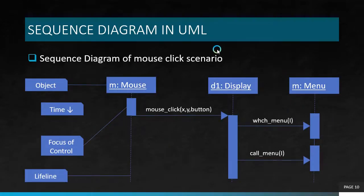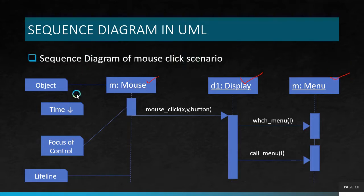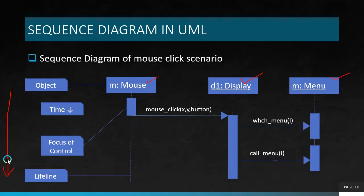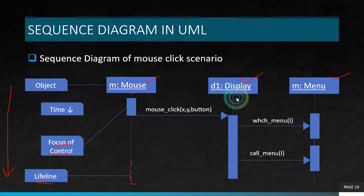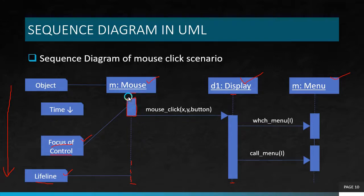Next, let's consider the sequence diagram. In a sequence diagram, there are three important things to consider. First are the objects — here we have a mouse object, a display object, and a menu object. Also, note that time grows downwards in this diagram, whereas in other cases time may be horizontal. The other two topics are lifeline and focus of control. The lifeline consists of the dashed lines that indicate the lifetime of an object — the mouse has a lifetime from one point to another, and the display similarly.